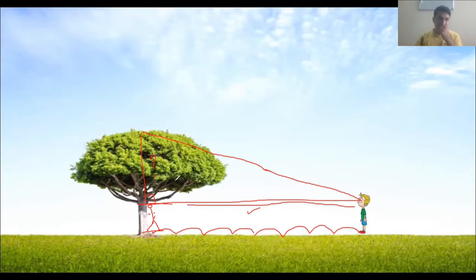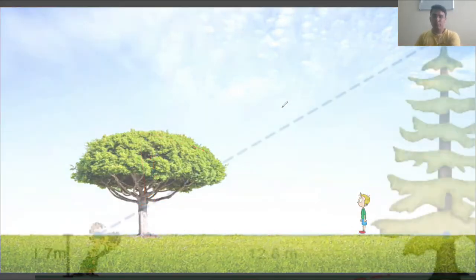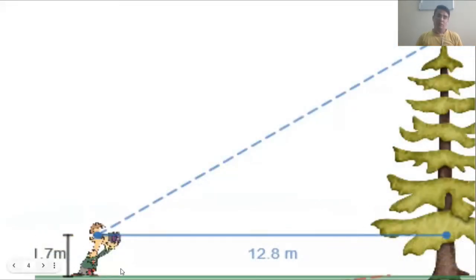Let me just take you to another example. I have taken the same example. This is your height 1.7, this is the distance you have traveled. Now I am figuring out how can I find the height of the remaining tree, the remaining part of the tree. We'll come back to this topic once we are done with the basics.